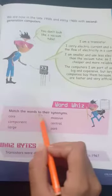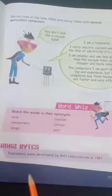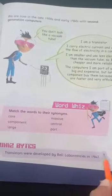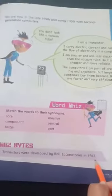Students, here is an activity to match the words to their synonyms. The transistors were developed by Bell Laboratories in 1947. Here is the name of the laboratories where the transistors were developed, and the year is also mentioned.